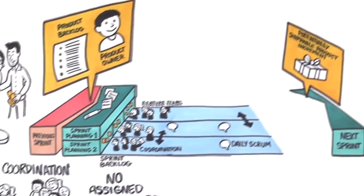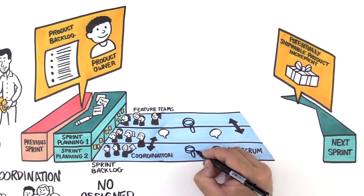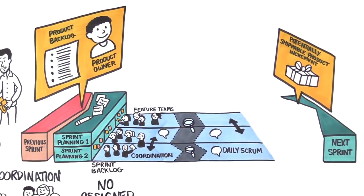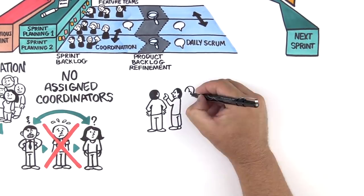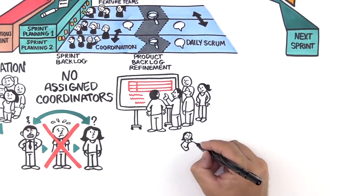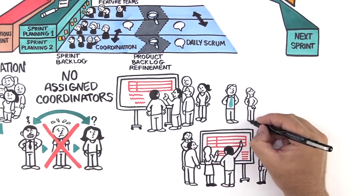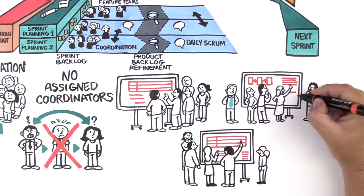Halfway through the sprint, teams briefly pause the current sprint work for product backlog refinement—collaboration with customers and end users to clarify work for future sprints. By connecting teams to customers, we free up the product owner for vision and prioritization.